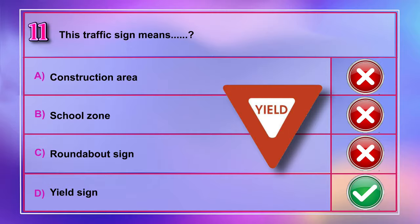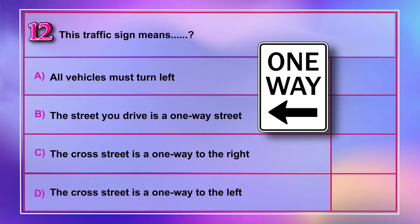Question number 12: This traffic sign means A) all vehicles must turn left, B) the street to drive is a one-way street, C) the cross street is a one-way to the right, D) the cross street is a one-way to the left. Correct answer is D: the cross street is a one-way to the left.